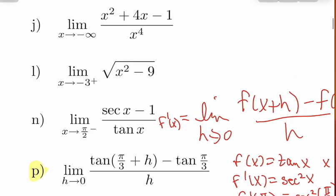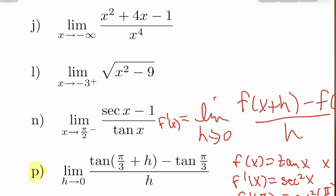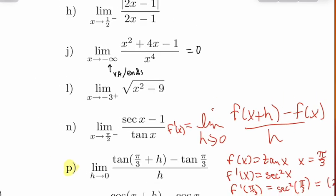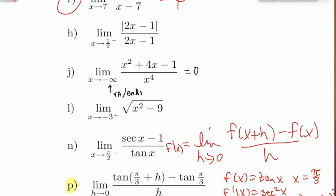If you have a limit to infinity, remember that is just the end behavior. What happens when the highest power is in our denominator? For a rational function, it's always heading to zero — so the answer to that one is zero. You should always try direct substitution unless you see infinities. If you're heading toward positive or negative infinity, that is end behavior. If you're heading toward a number, that's not end behavior.